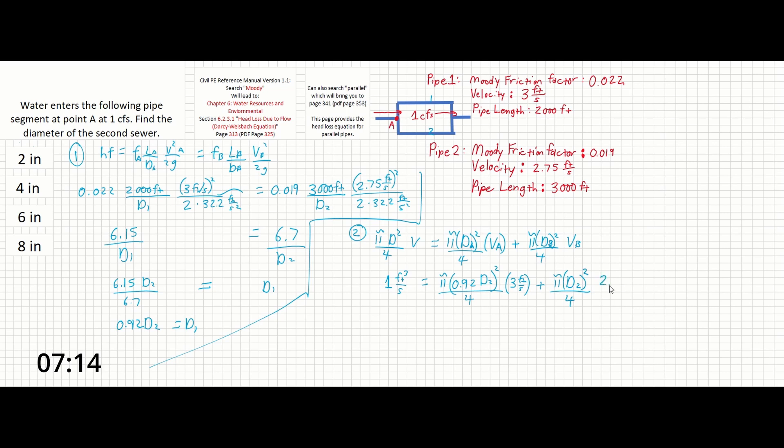and if we solve this out a little bit more we can see that pi times the square of 0.92 divided by 4 will give us 1.99 d2 squared plus a little simpler over here pi divided by 4 times 2.75 gives us 2.16 d2 squared. And so finally we have